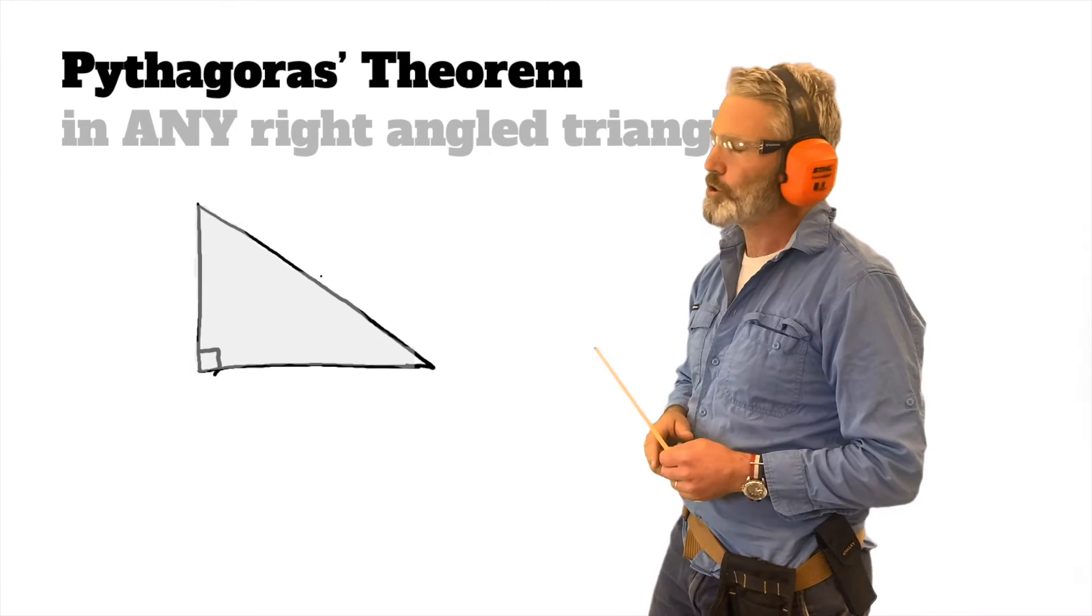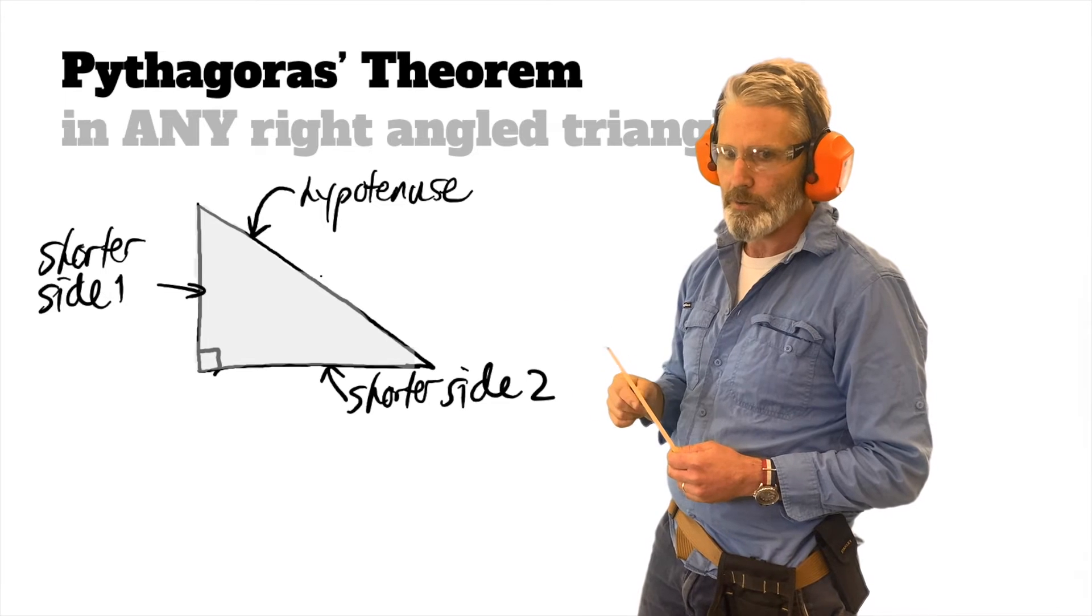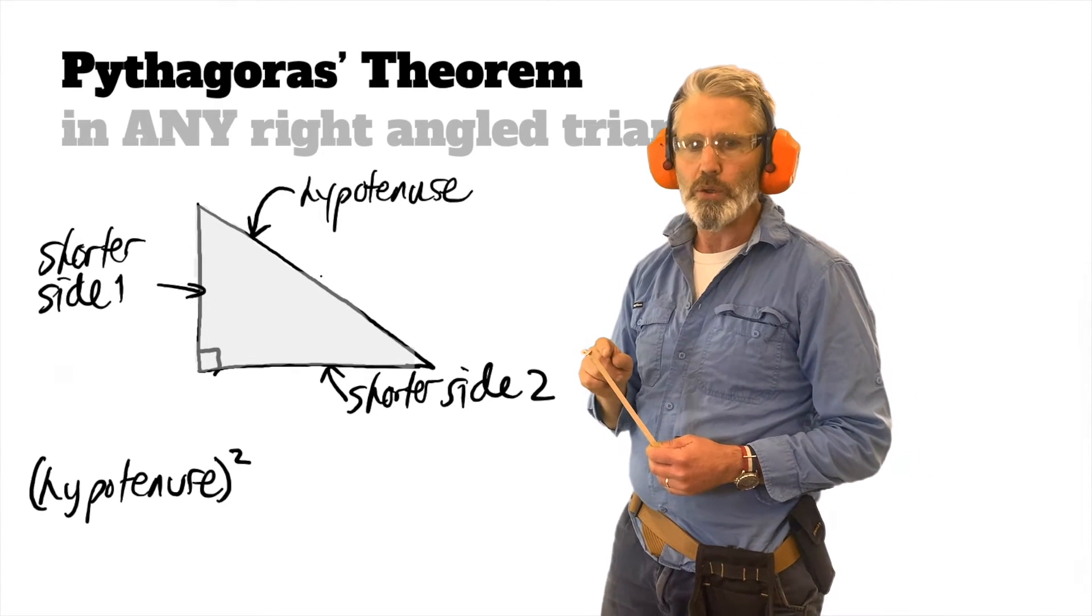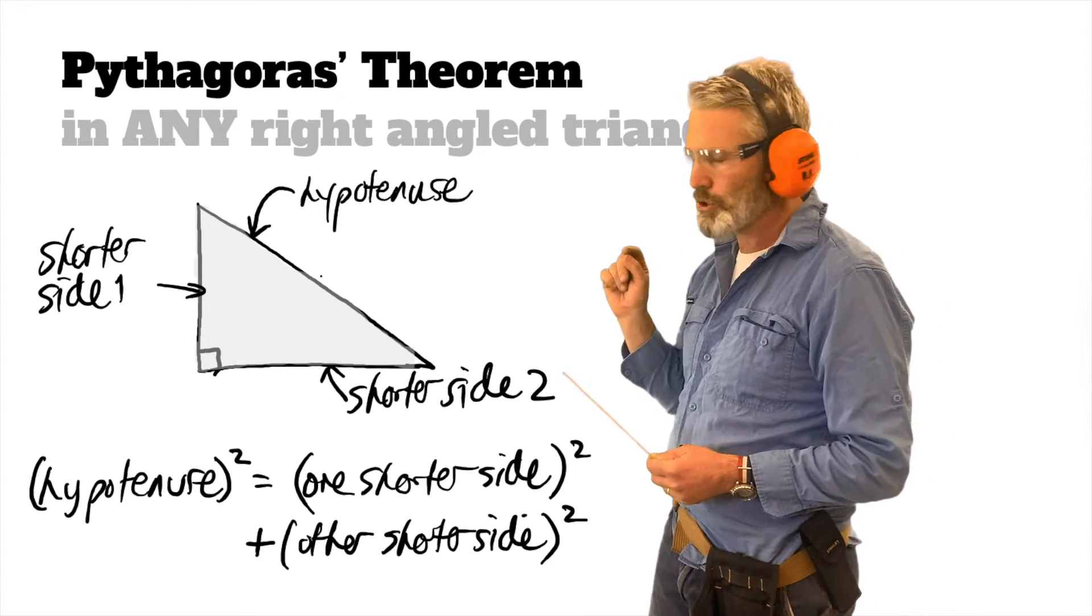that in any right-angled triangle, the hypotenuse, which is the long side opposite the right angle, the hypotenuse squared will be equal to one of the shorter sides squared plus the other shorter side squared.